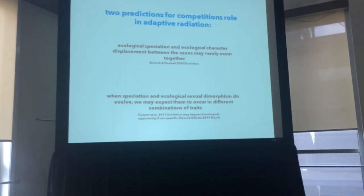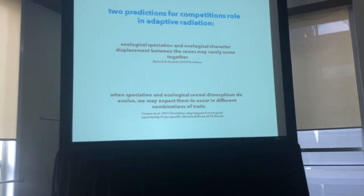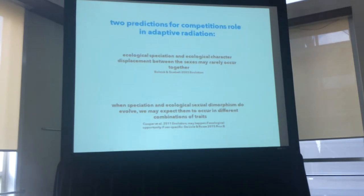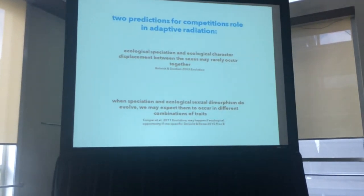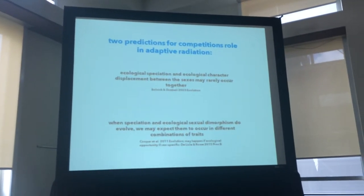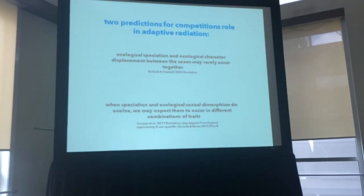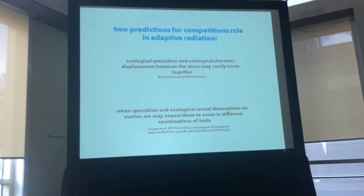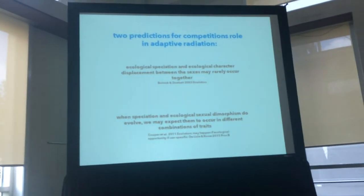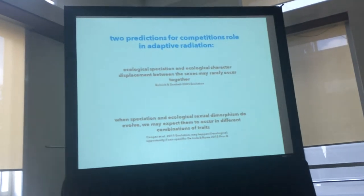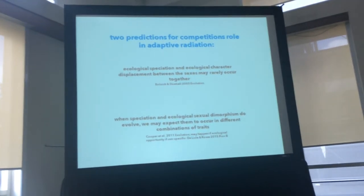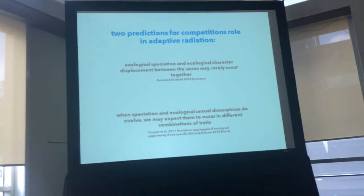There have been a number of tests of at least some of these predictions. Usually these tests are carried out at the macroevolutionary scale — looking at broad patterns of divergence across taxa, and specifically how sexual dimorphism may or may not be related to speciation and diversification rates. These empirical tests are interesting, but a little unsatisfying, because both predictions depend on processes occurring in the very early stages of speciation, before reproductive isolation and before phenotypic divergence between the sexes is extreme. Ideally, we want to find lineages in the early stages of speciation where we also have evidence of ecological character displacement between the sexes.